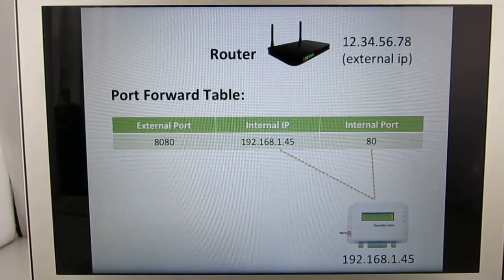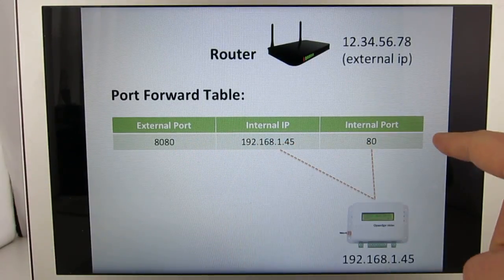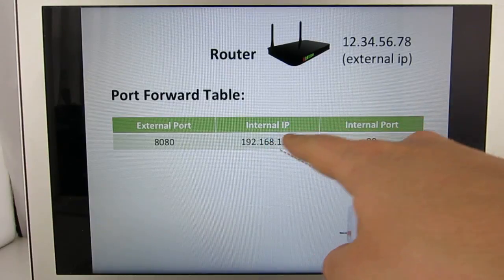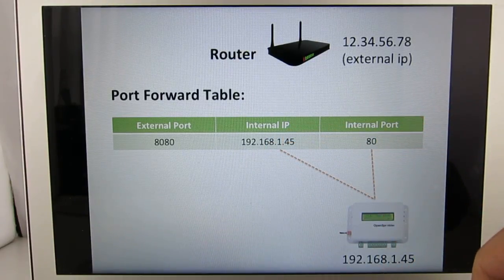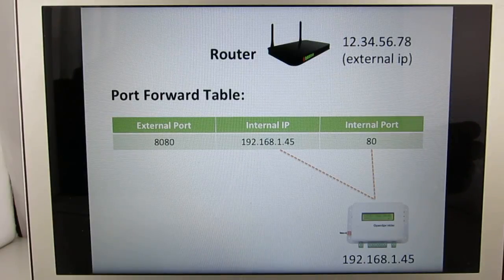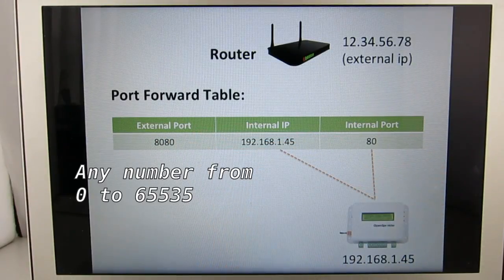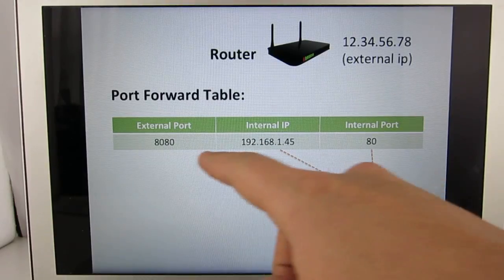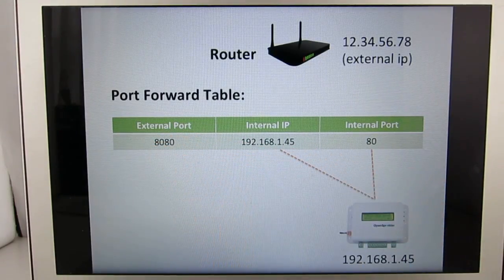More specifically, the router maintains a port forwarding table which is configured by you. For each entry, you define the external port as well as the internal IP and port number, and the internal IP and port have to match the OpenSprinkler's IP and port number. On OpenSprinkler, you can click button B1 to find out its IP address and port number. The external port can be any number between 0 to 65535, and it actually has nothing to do with the internal port number, unless your router forces you to use the same number for both. In this example, I'm using port 8080 as the external port number.